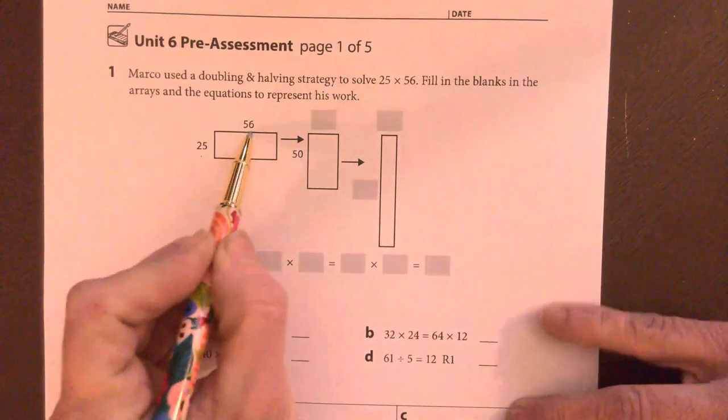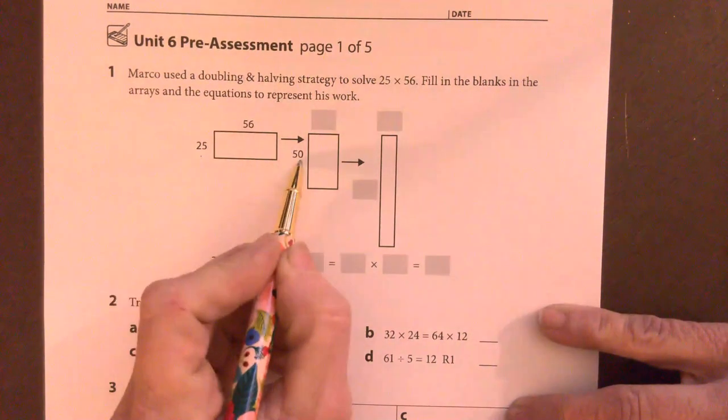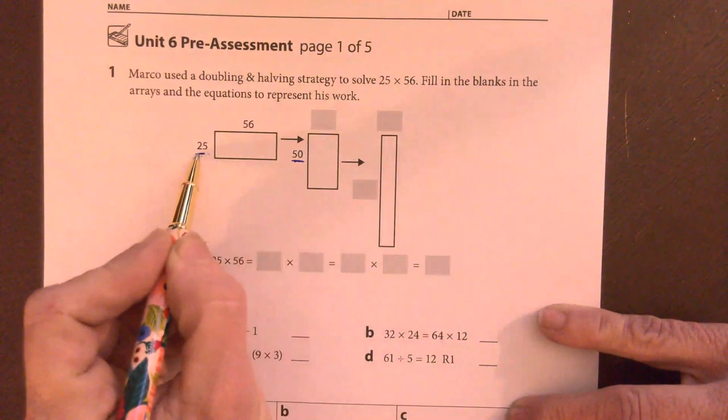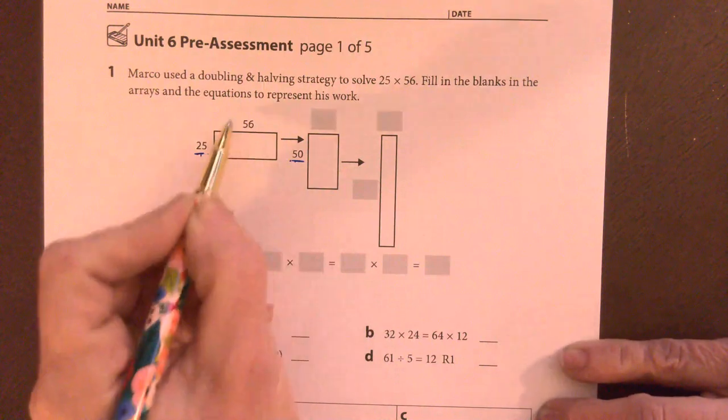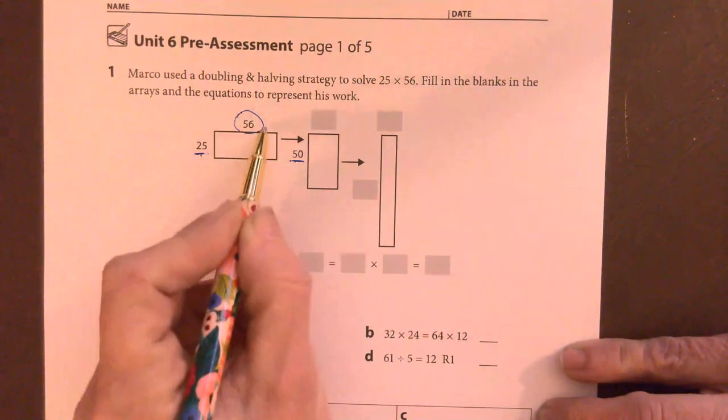So 25 times 56, and now he's got a 50 where he did have a 25. So he doubled this measurement, which means he needs to halve this measurement.